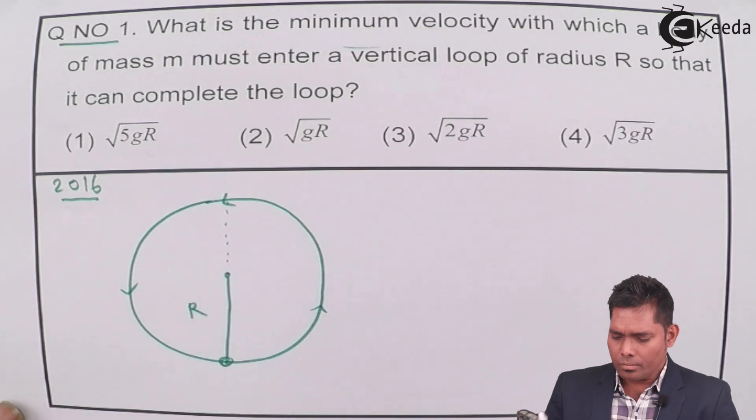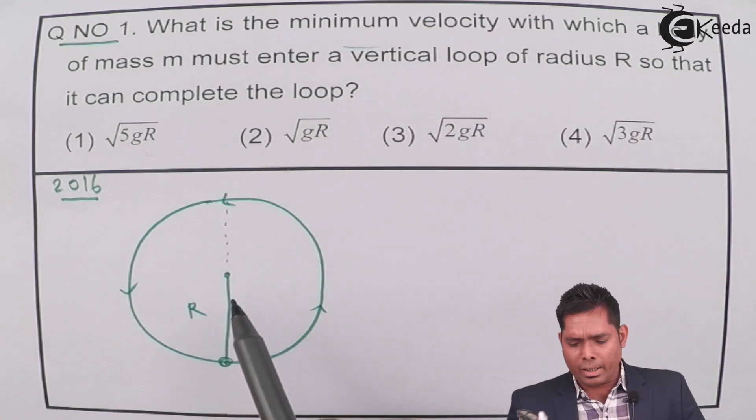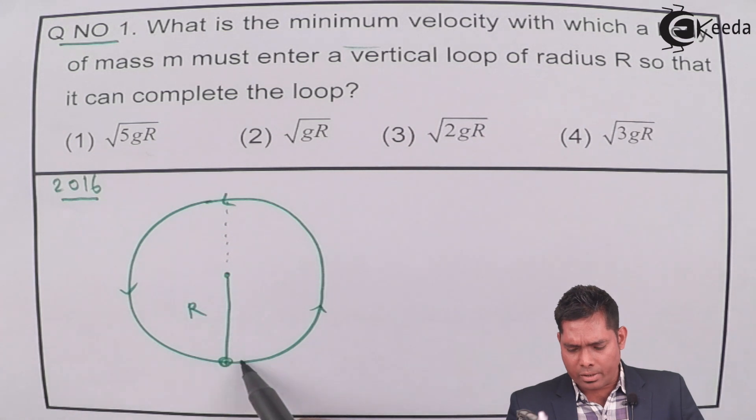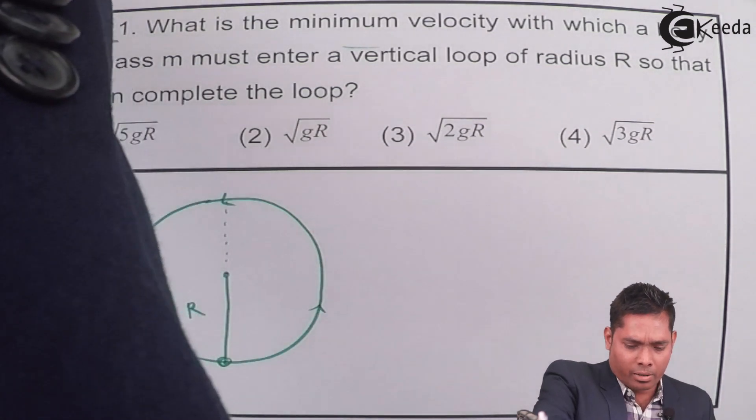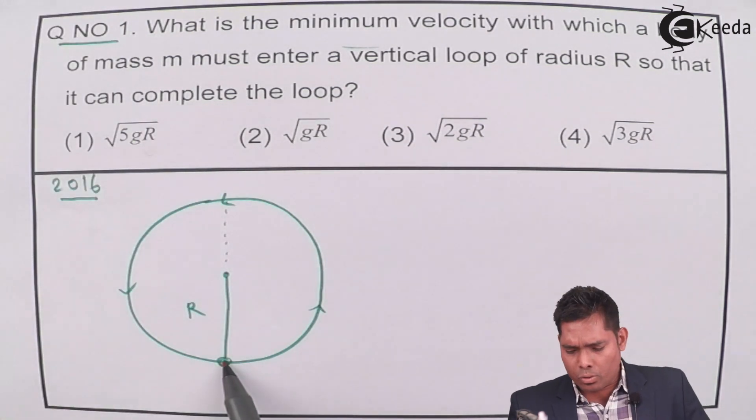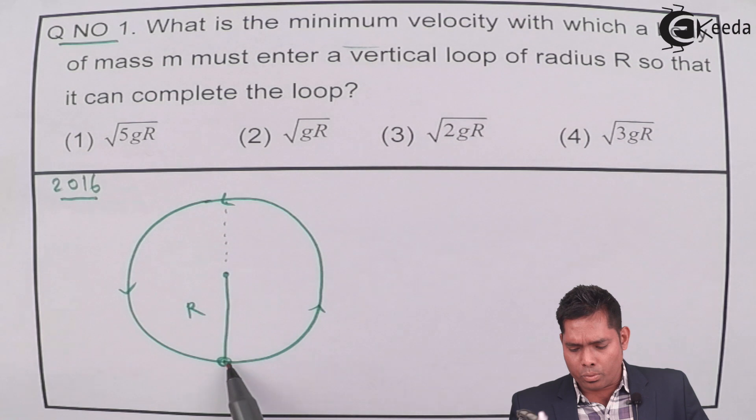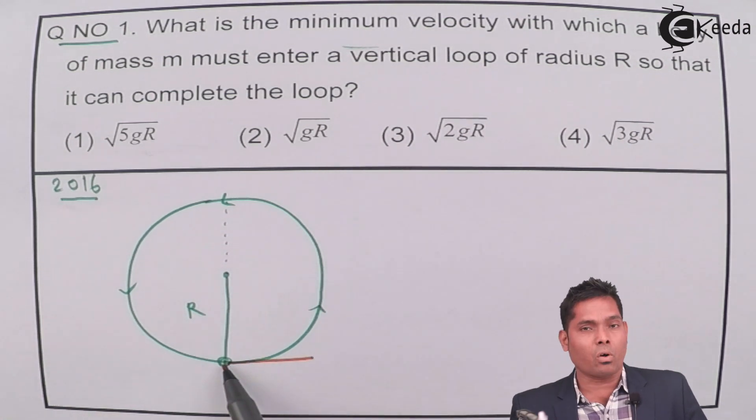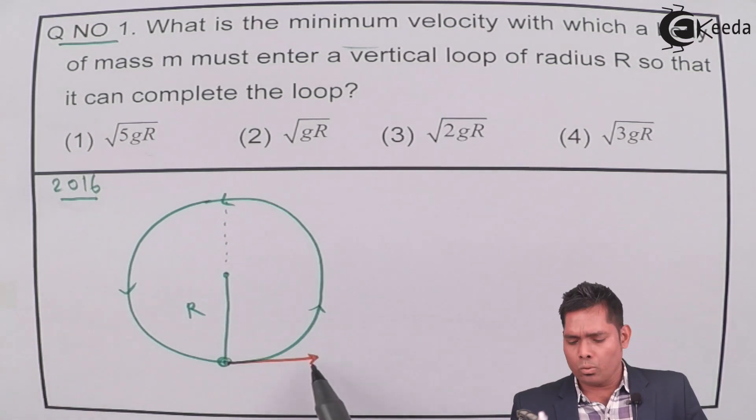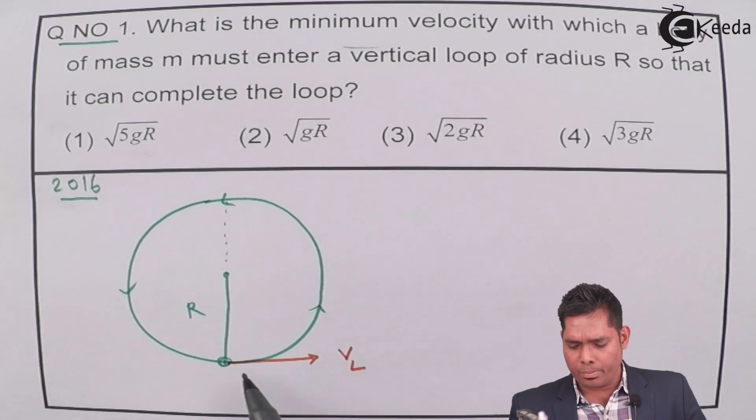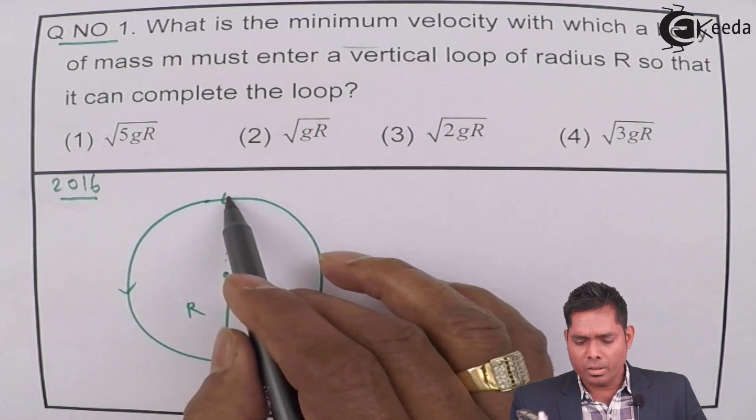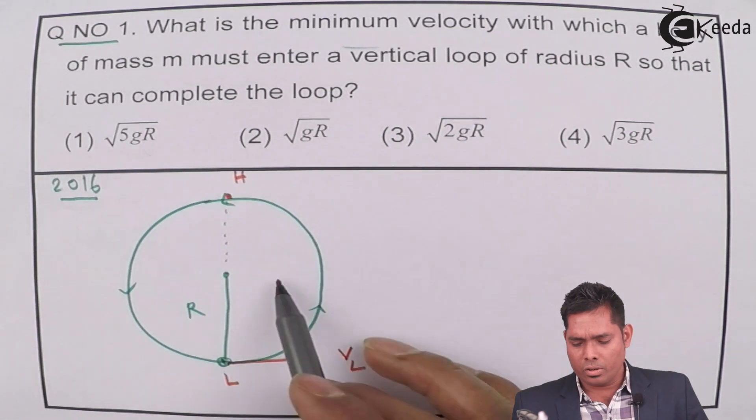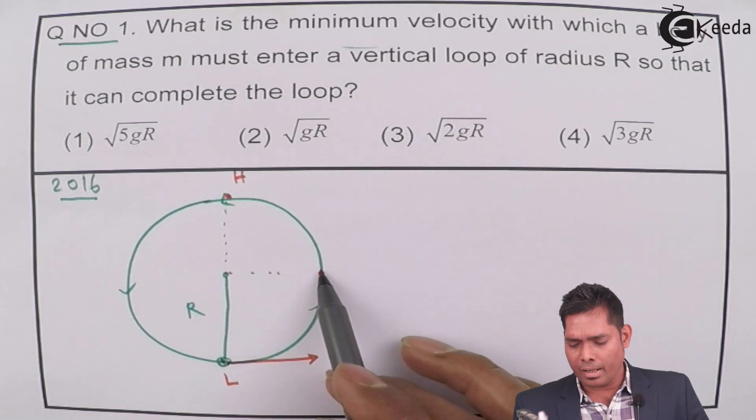This is the center. If we know that this is a string, suppose, and the stone is there and it is revolving in this circular loop. So, we know that at the bottom, to have a circular loop, to successfully complete the loop, to complete the loop here at the lowest point of the motion, we have to provide the value of the velocity at the lowest point. This point is L, lowest point. This is the highest point of motion. This is the midpoint. I will write M for this.